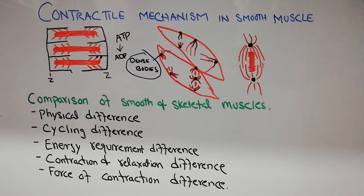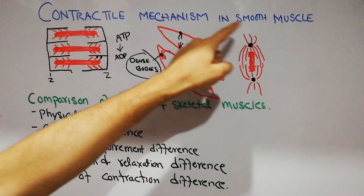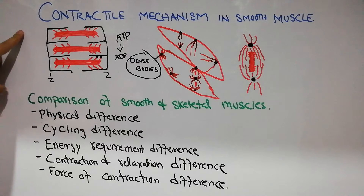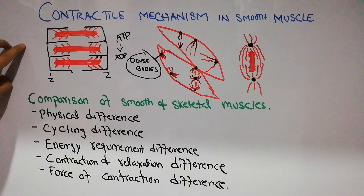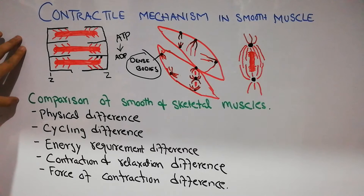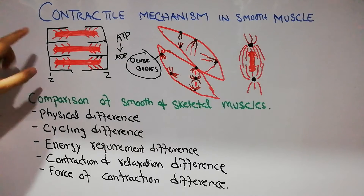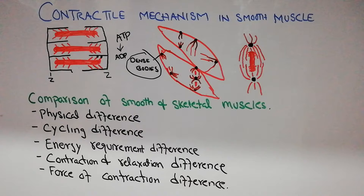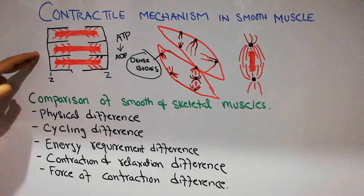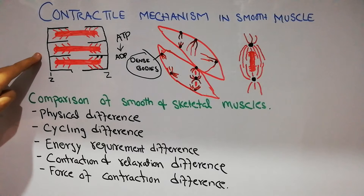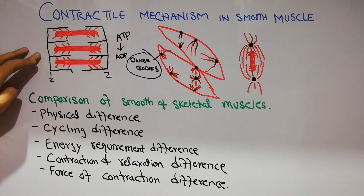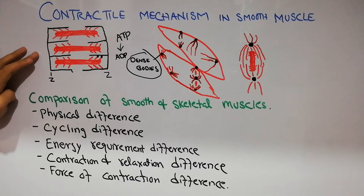In this lecture we are going to discuss the contractile mechanisms in smooth muscles. We have already discussed the structure, functions, and molecular mechanisms of skeletal muscles, and we have started discussing the types of smooth muscles. Now we are going to compare the mechanism of contraction of skeletal muscles with that of smooth muscles.